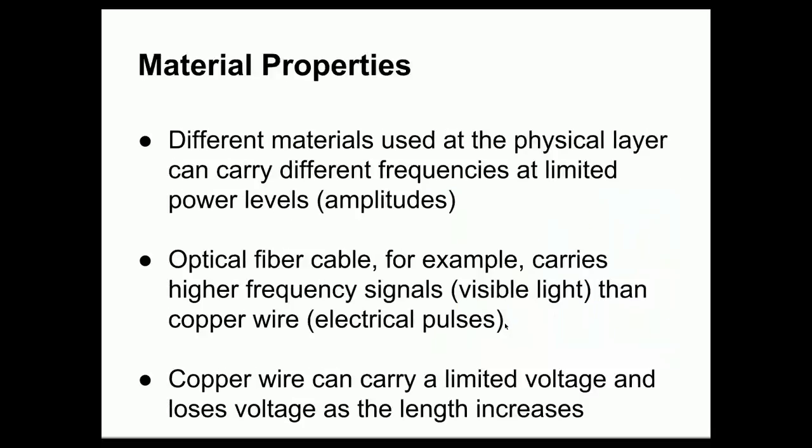Now, different physical materials at the physical layer can carry different frequencies at limited power levels. Not every type of material that we have can carry every frequency of electromagnetic wave. And not every material that we have is compatible with every amplitude or every power of electromagnetic wave. For example, if I take an optical fiber cable, this is a cable made of glass or plastic, which does not conduct electricity very well. An optical fiber cable would not transmit an electrical signal very well unless I sent an extremely high amplitude electrical signal, enough to overcome the resistance of the non-conductive plastic or glass. And if I sent a signal with that much power, that signal would actually probably be transferred through the air around the conductor, and it would probably damage the cable in the process. So I can't use an optical fiber to send an electrical signal.